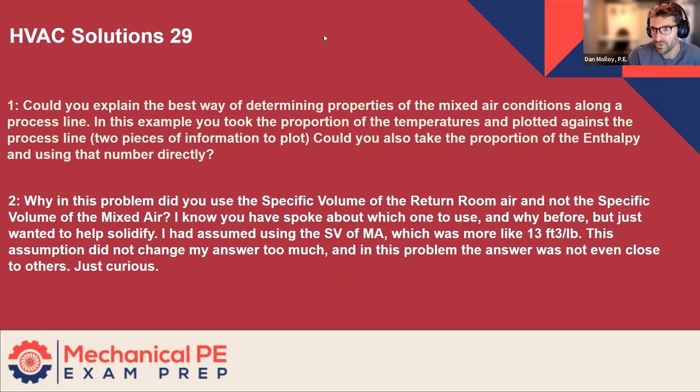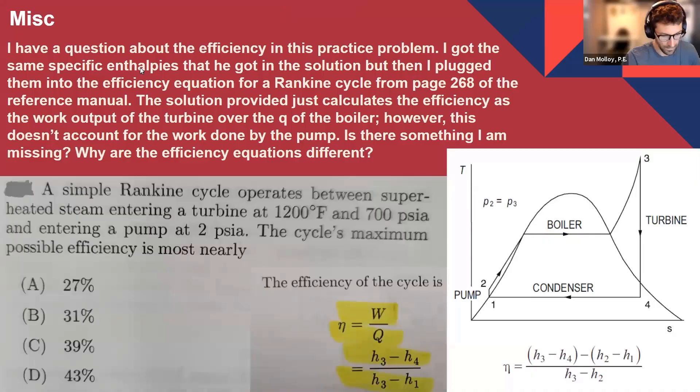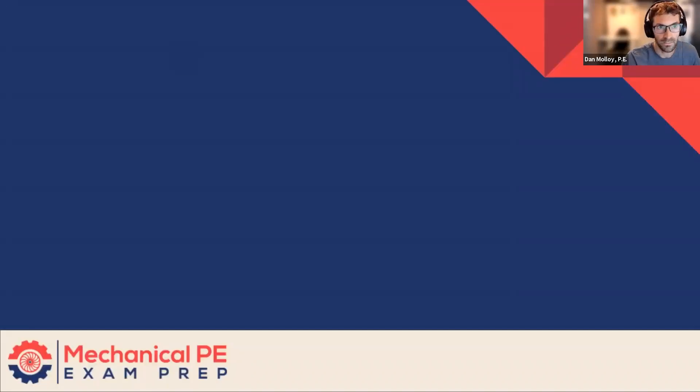Could you explain the best way of determining the properties of the mixed air conditions along a process line? In this example, you took the proportion of the temperature and plotted against the process line, two pieces of information to plot. Could you also take the proportion of the enthalpy and use that number directly? And I think the answer is yes. So I'm going to expand a bit on what I think this question is driving at, and hopefully in the process of doing that, I'll answer the question and maybe anticipate some other related questions as well.